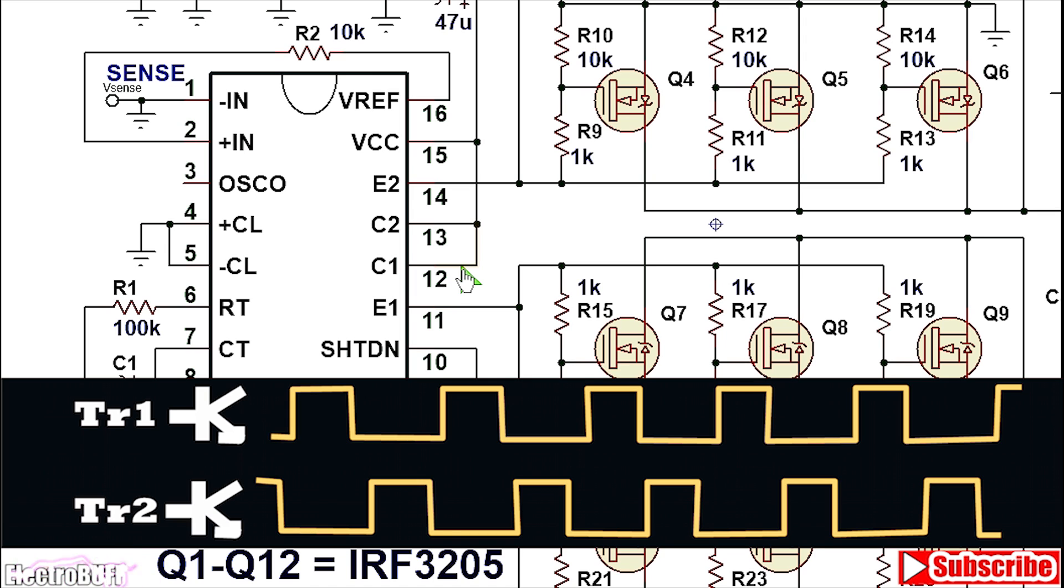Pin 11 is the emitter output of the first transistor and pin 12 is the collector of the first transistor. Pin 13 is the collector of the second transistor. Pin 14 is the emitter of the second transistor and pin 15 is VCC or the positive voltage supply to the IC as shown.